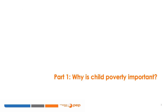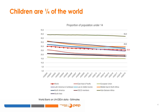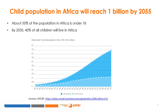Let's talk about why child poverty is important. First, because children make up one quarter of the world population, and even if child population is slowly decreasing due to lowering fertility rates, it is still a large share of the total. In sub-Saharan Africa, children under 14 are over 40% of the population. Projections tell us that by 2050, about 40% of the world's total child population will live in Africa.